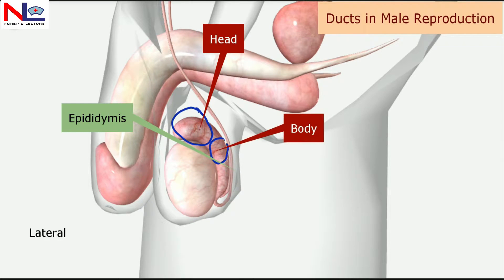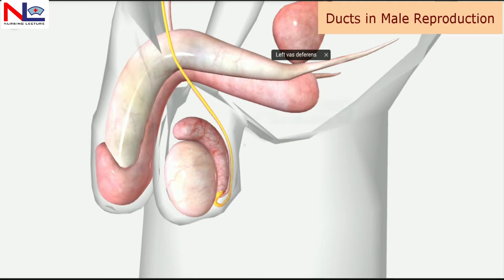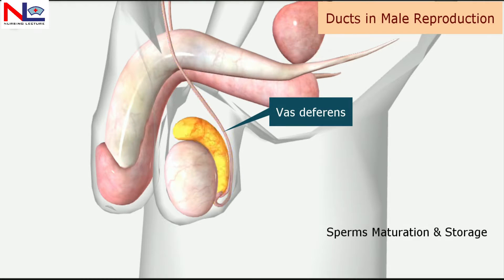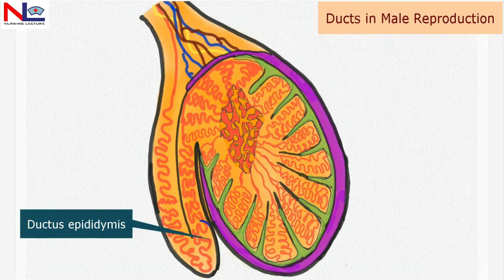The epididymis has three parts: the superior portion is the head, the middle narrow portion is the body, and the inferior end portion is the tail. The tail is continuous with the vas deferens. This structure is responsible for sperm maturation as well as storage if the sperm are not ejaculated.